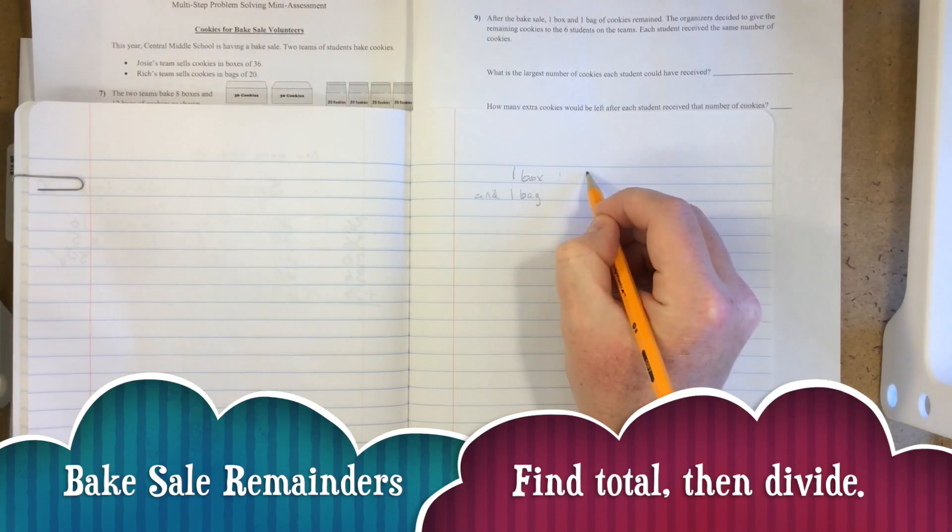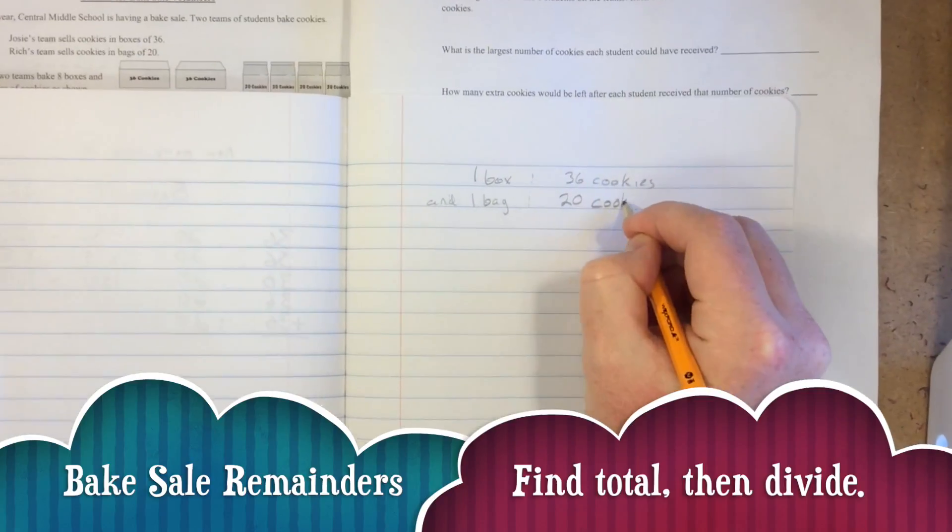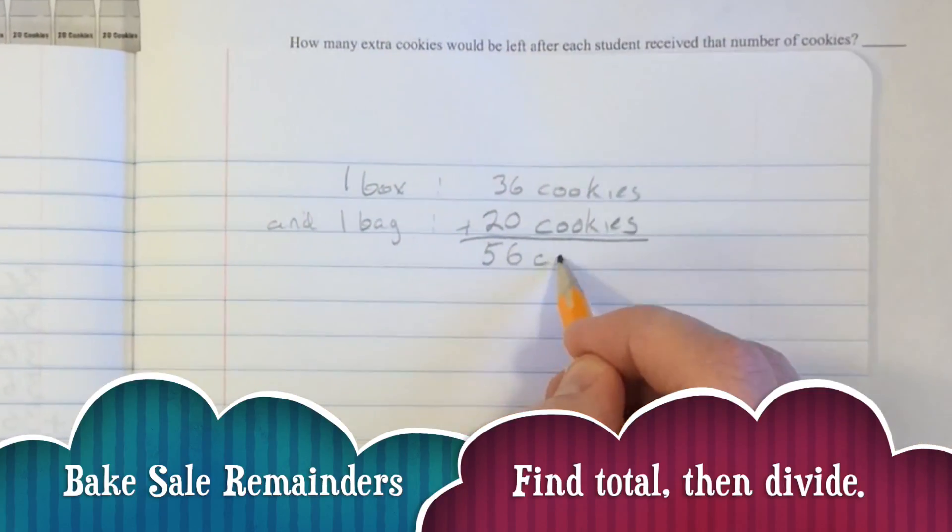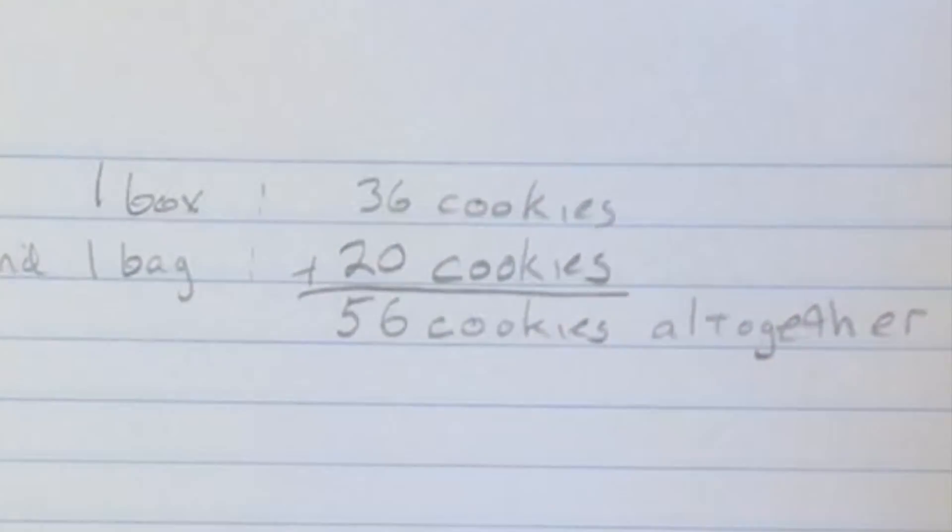First we know one box has 36 cookies, one bag has 20 cookies. 36 plus 20 equals 56 total cookies.